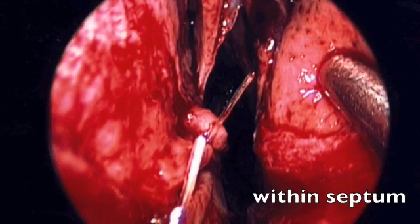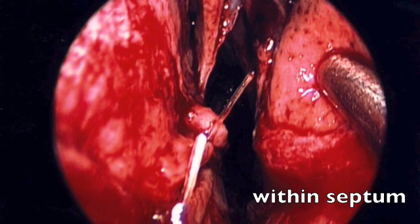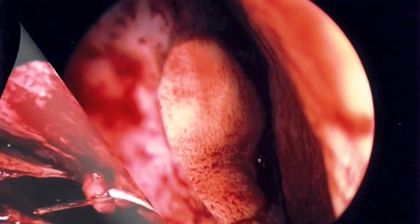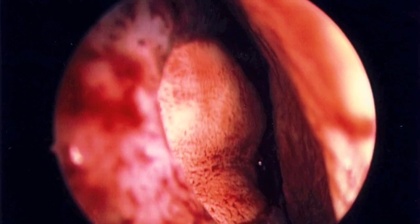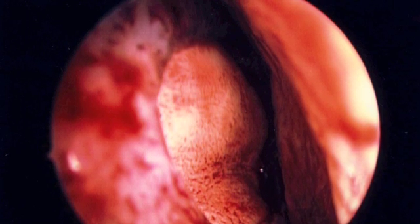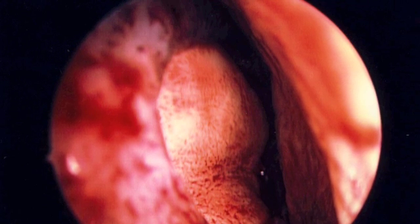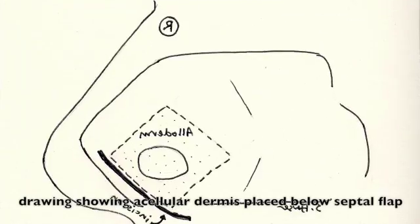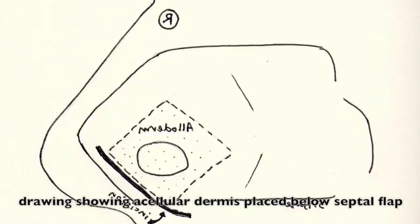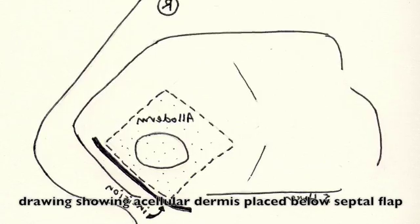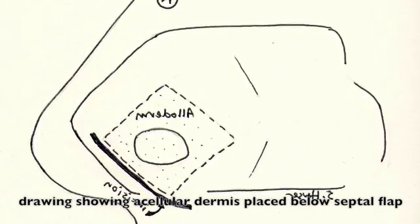A view from the inside of the septal flap shows that the rotation flap from the right side is closing the perforation nicely. A view from the left side now shows the septal mucosa has been replaced into position — this is now over acellular dermis, or alloderm, which has been slid into the septal flap and is shining out through the perforation on the left side. This drawing shows the alloderm slid into place below the lining and now shining out of the exposed perforation site.